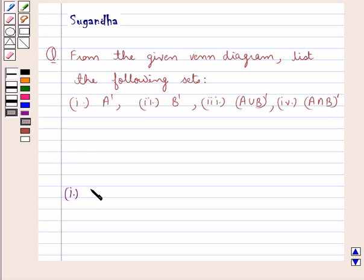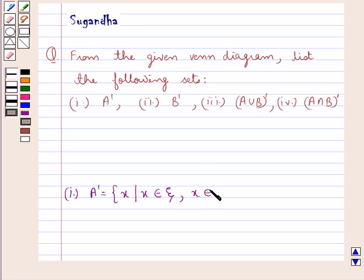First of all we have A complement. This is the set containing the element X such that X belongs to the universal set ξ but X does not belong to the set A. That is, it contains all the elements that belong to the universal set but not the set A.